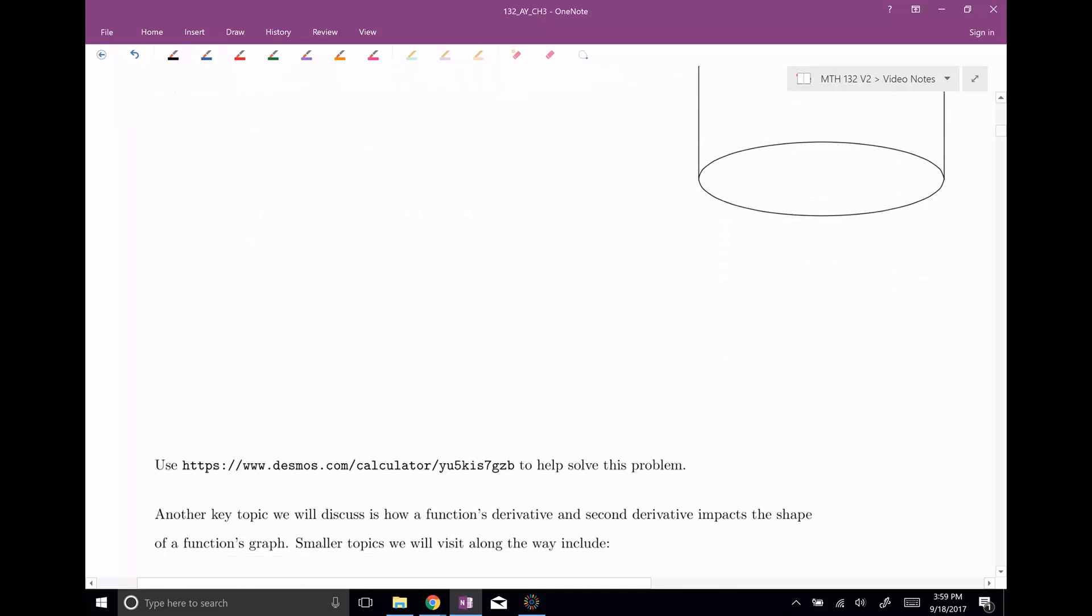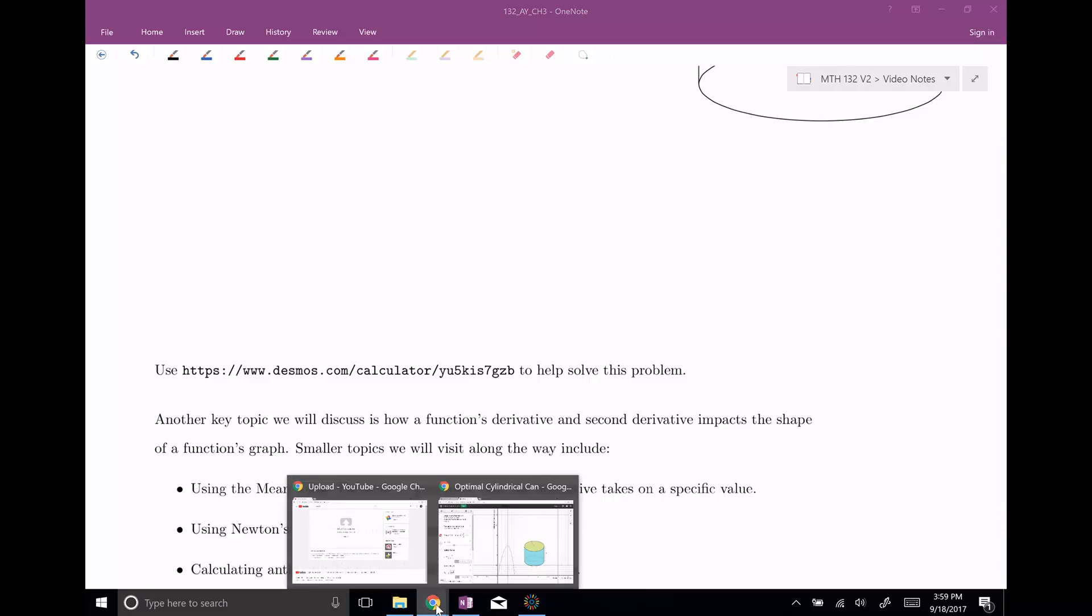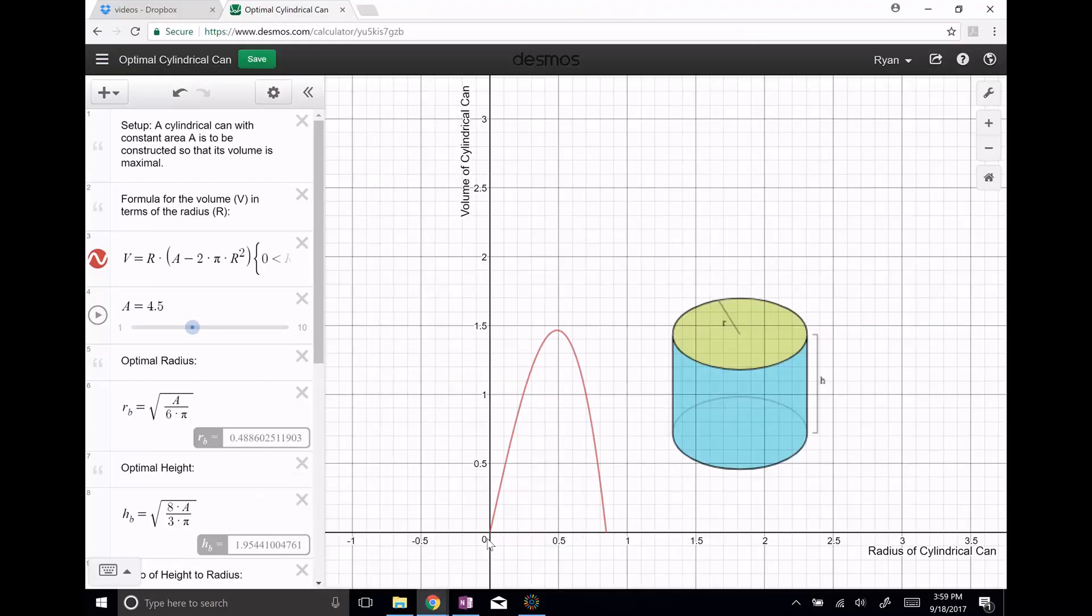And so I have a little Desmos applet here for us, which I've already loaded. So let's go over here. And here I actually have the situation, and this has a lot of the math that we will get to. But you can see, so I have a little slider here for a fixed amount of area, so whether that be 4.5 maybe square feet, or you can kind of move this around.